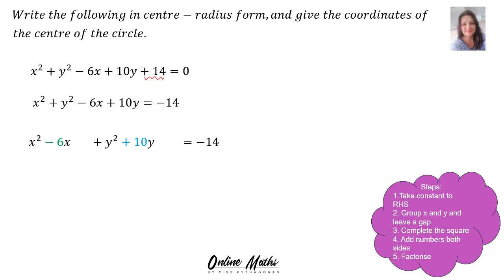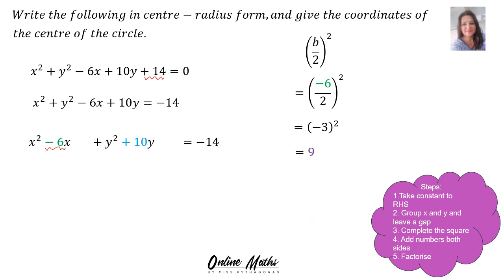Step 3 is to complete the square. To complete the square, there is a little formula: b over 2, squared. Remember, this formula is not on the formula sheet. You will use the b over 2 squared formula to complete the square. Let's deal with x first. Where do you find b? b is the coefficient of x — in other words, the number in front of x. In this case it's negative 6. Therefore, in b's place we substitute negative 6 divided by 2. Negative 3 squared is equal to 9.